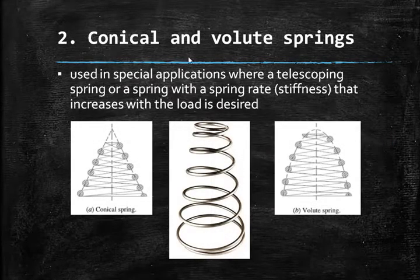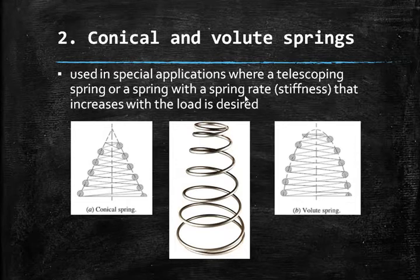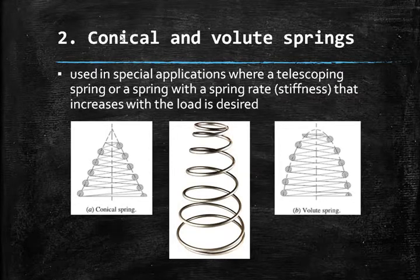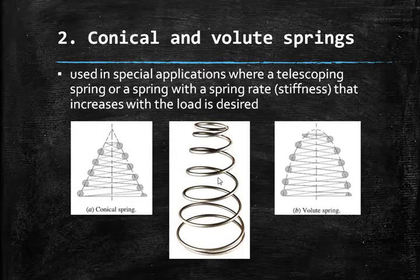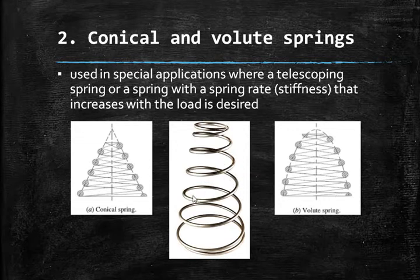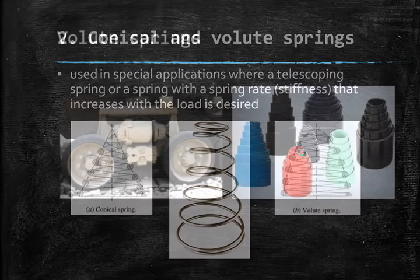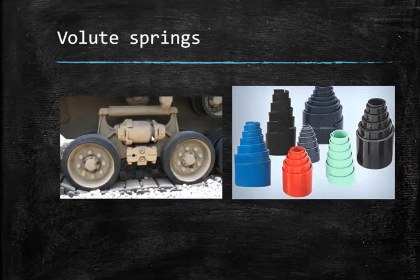The second type is conical and volute springs. Conical springs are used in special applications where a telescoping spring or a spring with a rate that increases with load is desired. They are commonly seen in TV remote battery compartments. Volute springs are used in vehicles — for example, in military tank applications for absorbing lower shocks.